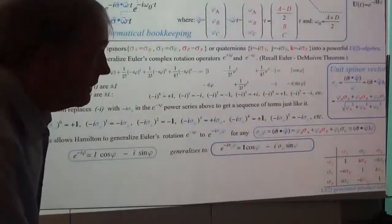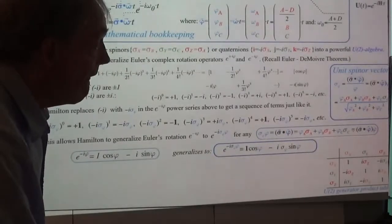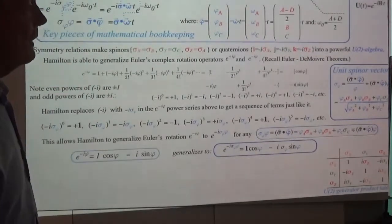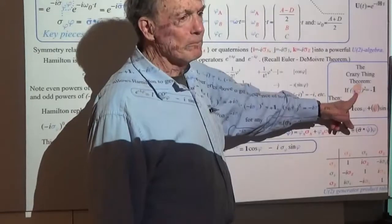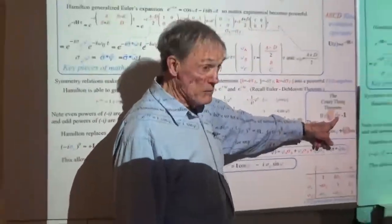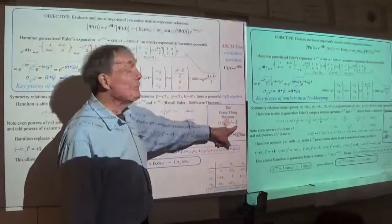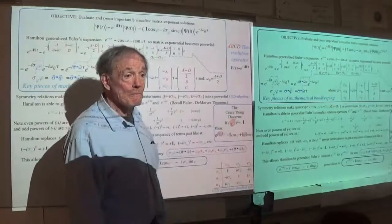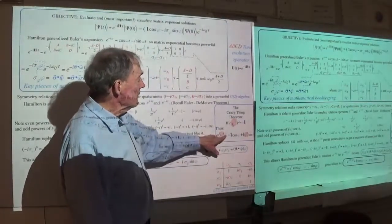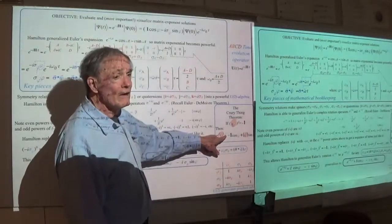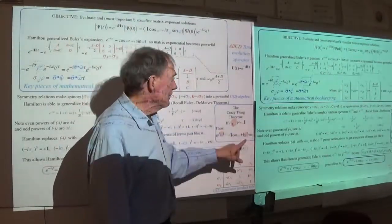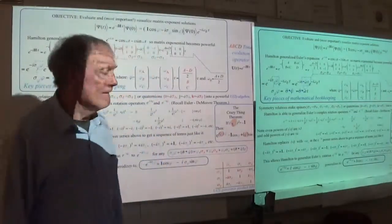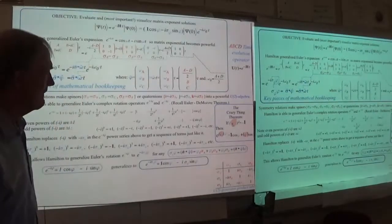Here's what I would like you to see: we've really proved the crazy thing theorem. That is, if you have a crazy thing whose square gives you minus the unit, then the exponential of the crazy thing times a parameter gives you a cosine times the unit and the crazy thing times the sine of that parameter. Cosine of the parameter, sine of the parameter — that's the crazy thing theorem.